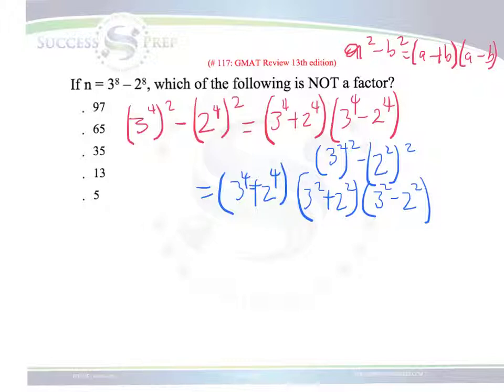At this point, we can go ahead and start figuring out what these values are going to give us. We know that the 3 to the 4 is 81, and this is 16. We know that this is going to be your 9 plus your 4, and this is your 9 minus your 4.